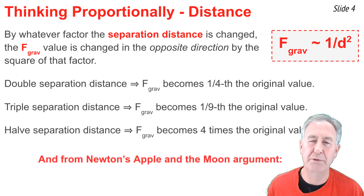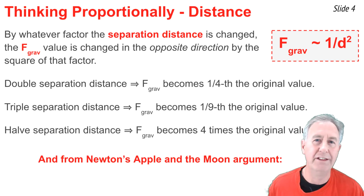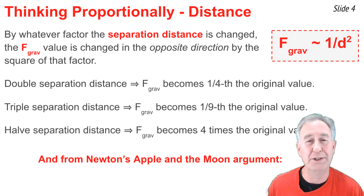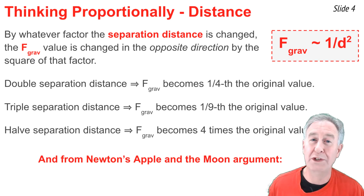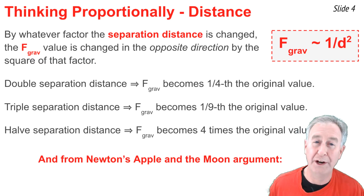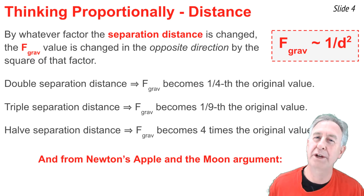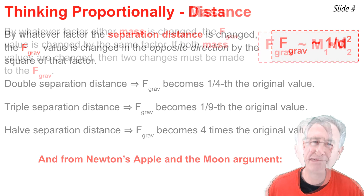If we apply this principle to the apple and the moon argument, we could claim that if an object like the moon was 60 times further from Earth's center than an object like an apple, then that moon's acceleration and force would be 60 squared — that is, one-three-thousand-six-hundredth — of the original value.